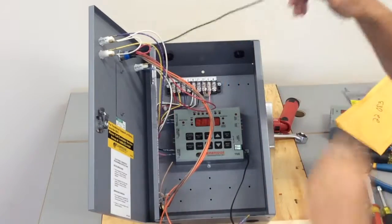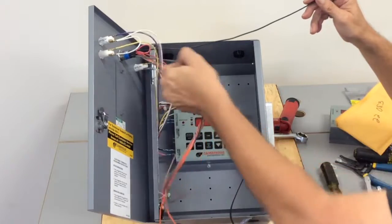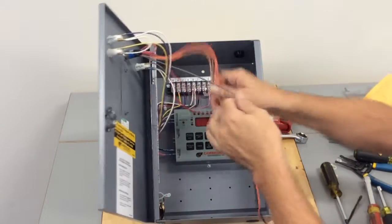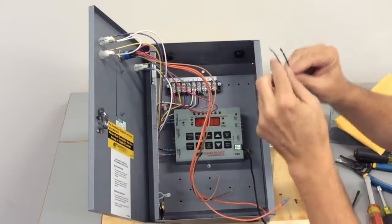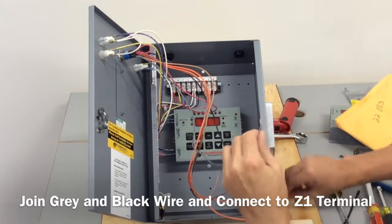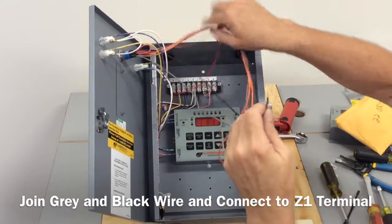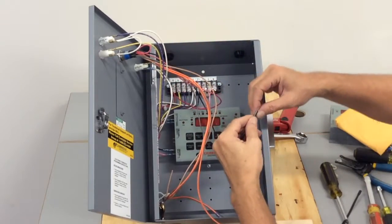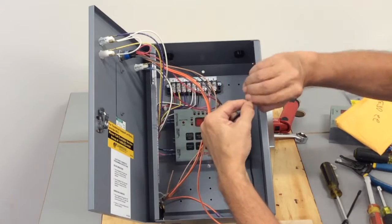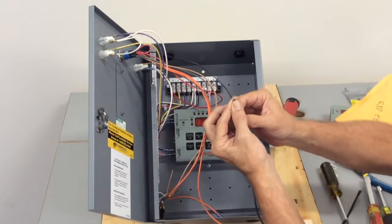The next wire, number three, and our gray wire, number four, they will be joined together so that we can place those on our Z1. I recommend twisting them together, maybe even stripping them a little extra, just so you get a better bite under that terminal.